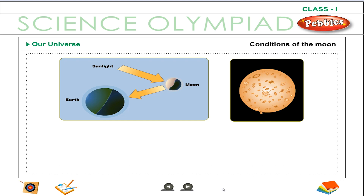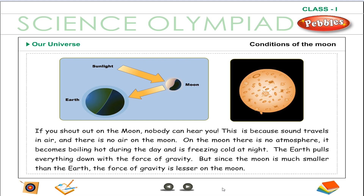Conditions on the moon. If you shout out on the moon, nobody can hear you. This is because sound travels in air and there is no air on the moon. On the moon, there is no atmosphere. It becomes boiling hot during the day and is freezing cold at night.